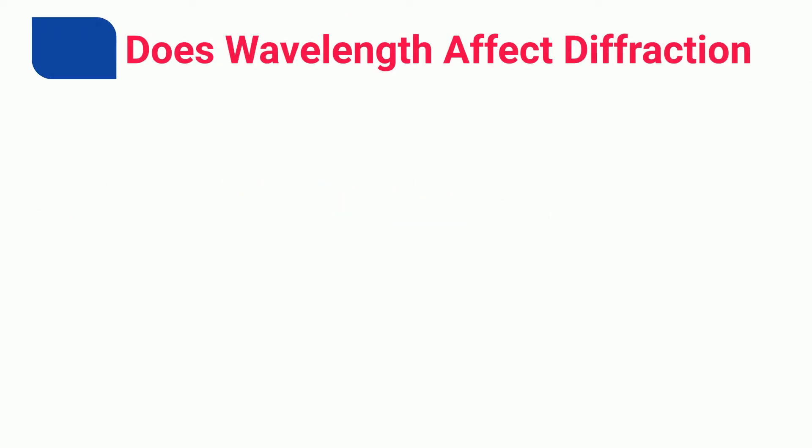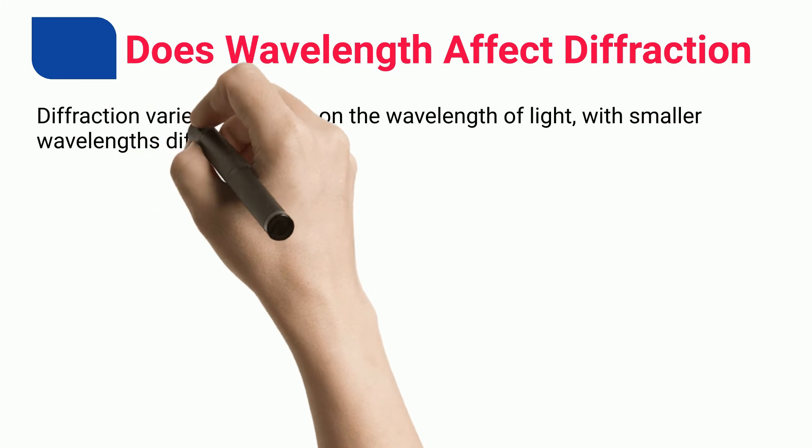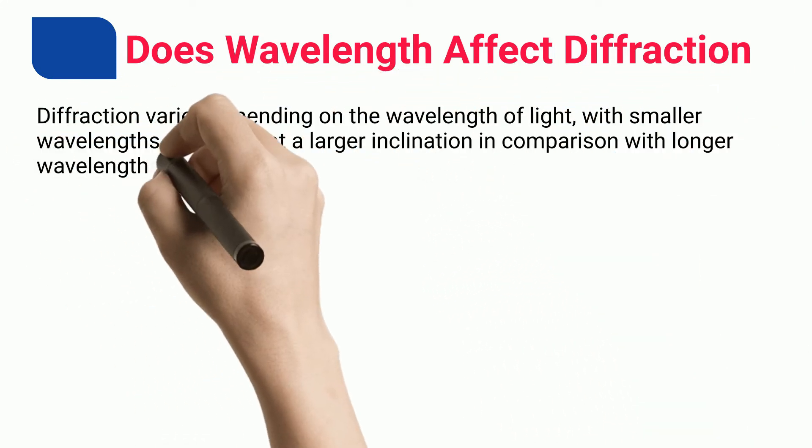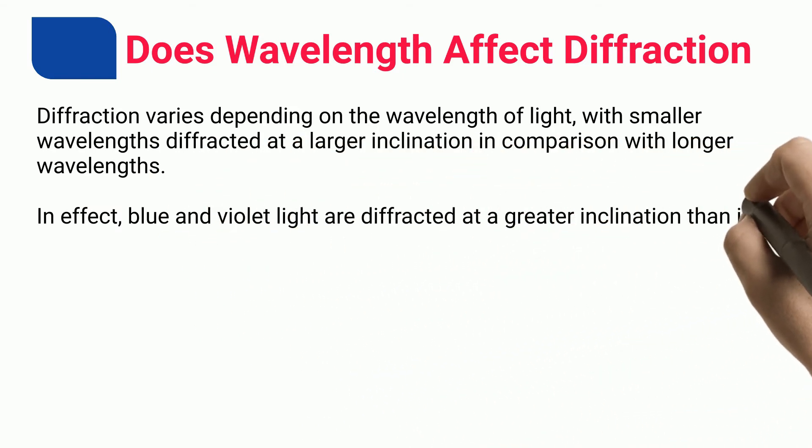Let's start with the objectives of this tutorial. Diffraction varies depending on the wavelength of light, with smaller wavelengths diffracted at a larger inclination in comparison with longer wavelengths. In effect, blue and violet light are diffracted at a greater inclination than red light.